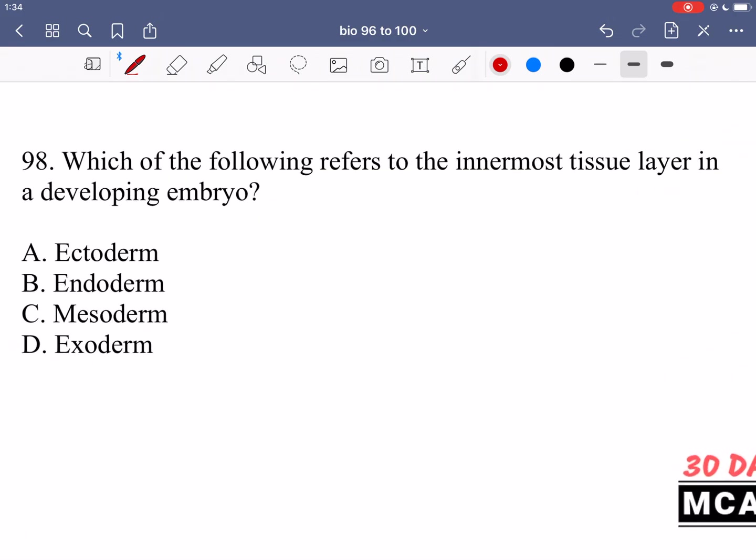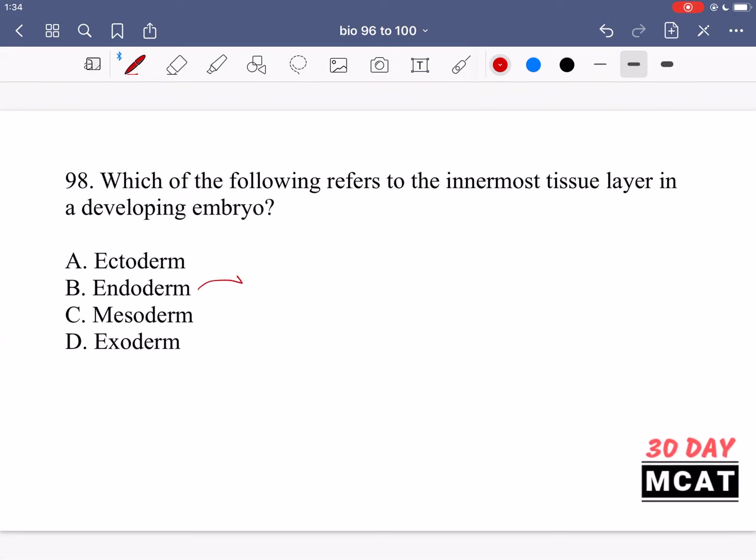So endo is inner. Meso has that M which you can remember as middle and then ecto is just the remaining one. It's the one that's at the outside, the outermost. Ecto kind of sounds like exoskeleton and I keep it in my head that an exoskeleton is a skeleton on the outside.